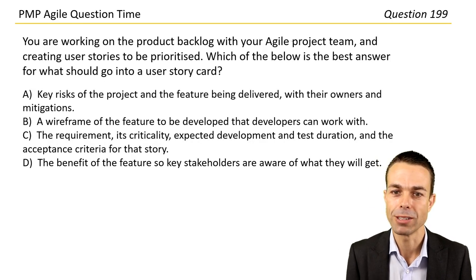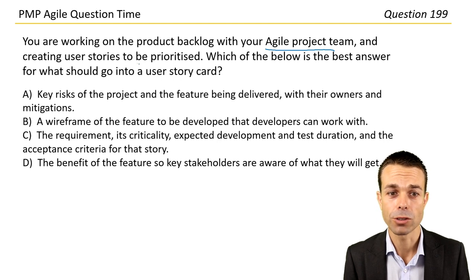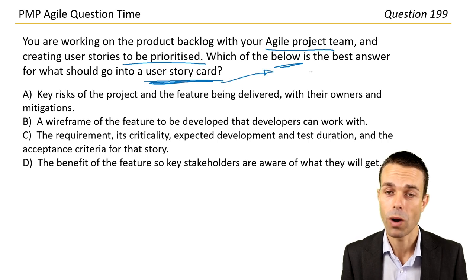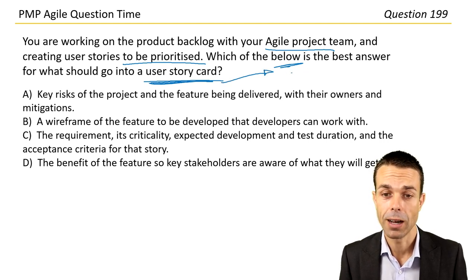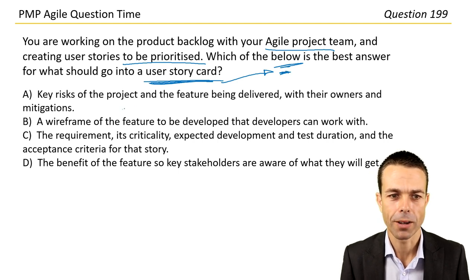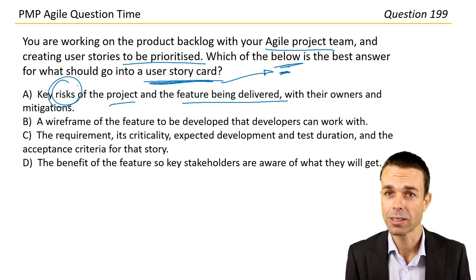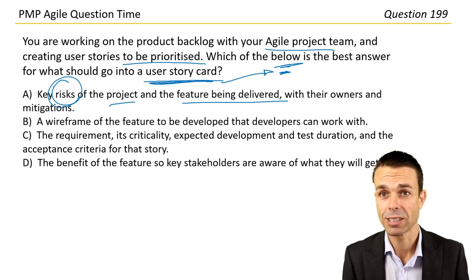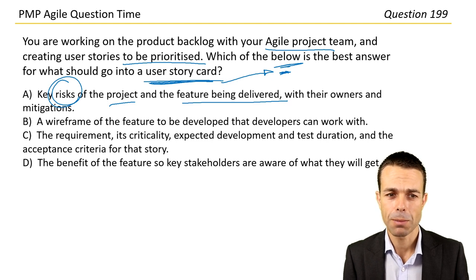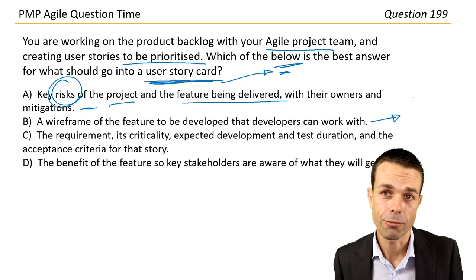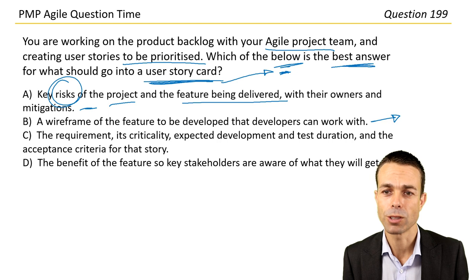You're working on the product backlog with your Agile project team, creating user stories to be prioritized. Which of the below is the best answer for what should go into a user story card? Key risks with owners and mitigations — that's more around the risk log. A wireframe of the feature — that's a good idea, but you may not use it in every story card. So what is the best answer?